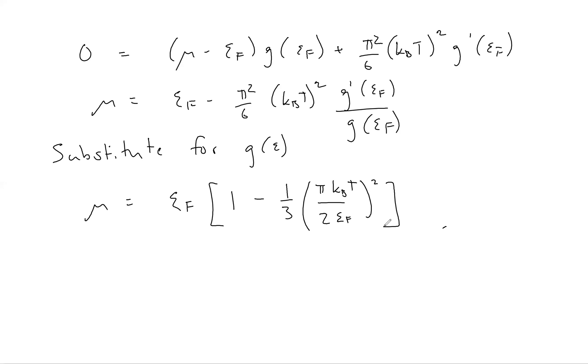Already you can see that the correction to the chemical potential with temperature is rather small, because typically we expect Fermi energies are of order 10 to the 4 Kelvin. For room temperature, this factor in parentheses will be of order 10 to the minus 4. So this is how we fixed the chemical potential and at the same time allowed the temperature to be non-zero.